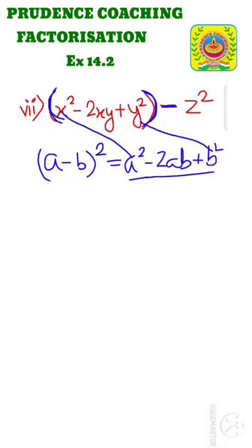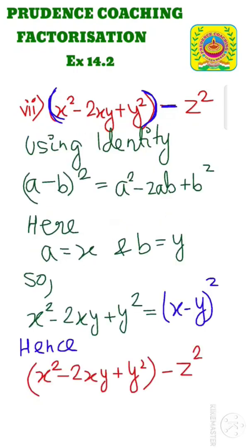So we can write this expression as (a - b)² where a = x and b = y. We can write this as (x - y)² and minus z² as it is. I think it is clear to you. So I have rewritten everything. Hence, in place of this we can write (x - y)² - z² as it is.